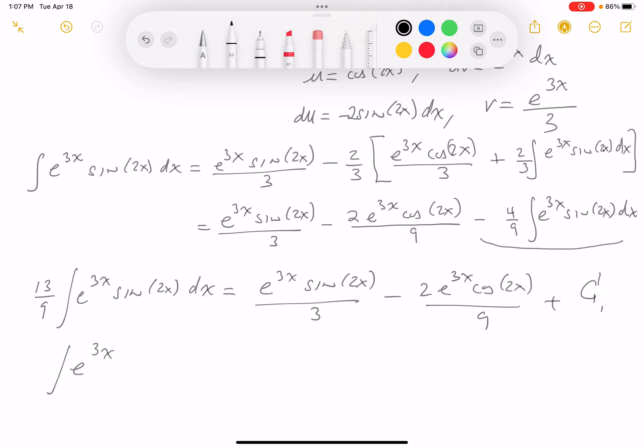So the integral of e^(3x) sin(2x) dx equals—well, 9/13 times 1/3 would be 3/13—and that's going to be e^(3x). You know what, let me make this a little bit neater. Again, I'm multiplying by 9/13, so I get 3/13 times e^(3x) sin(2x).